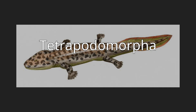The Tetrapodomorpha contains the crown group Tetrapoda — the last common ancestor of living tetrapods and all of its descendants — and several groups of early stem tetrapods, which includes several groups of related lobe-finned fishes, collectively known as the osteolepiformes. The Tetrapodomorpha minus the crown group Tetrapoda are the stem Tetrapoda, a paraphyletic unit encompassing the fish-to-tetrapod transition.